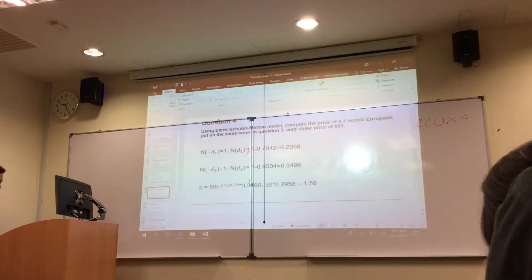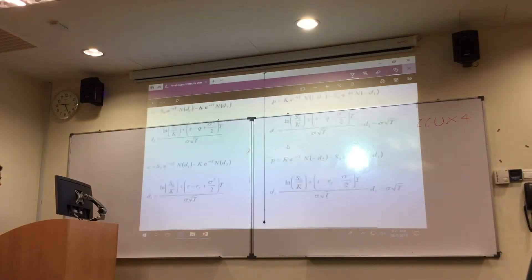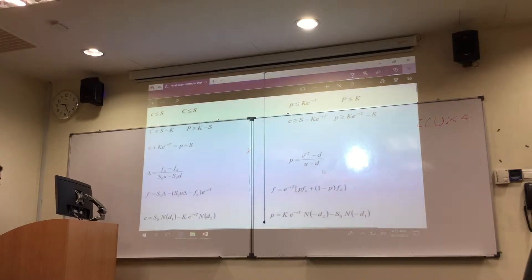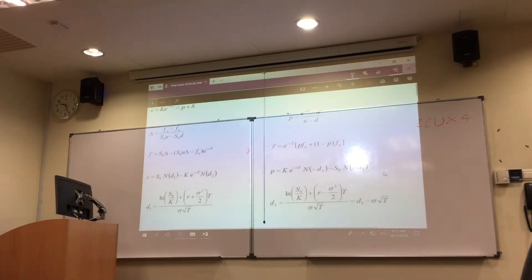If you look at the formula for P, you don't calculate N of D1 and N of D2, but you calculate N of negative D2 and N of negative D1.